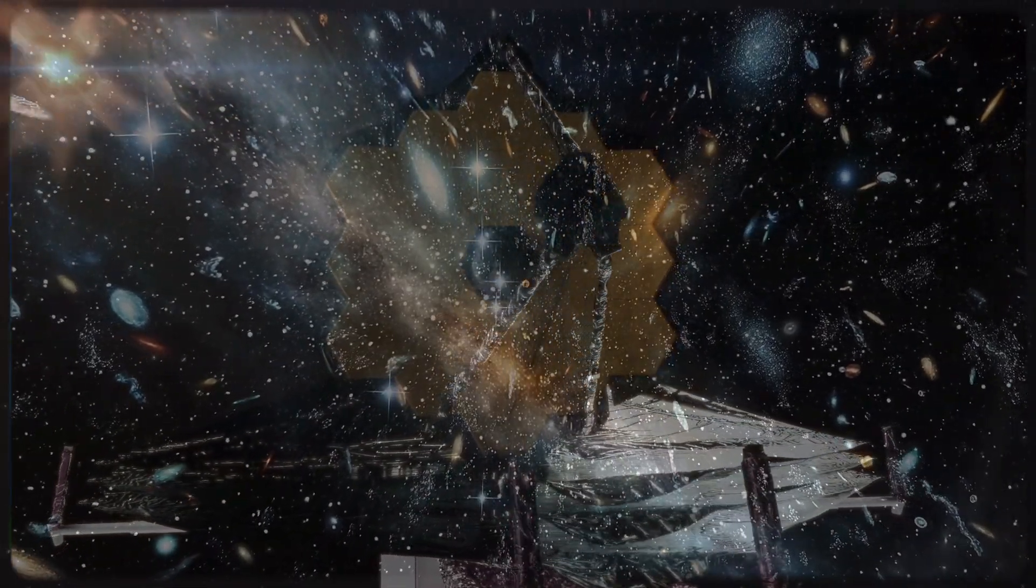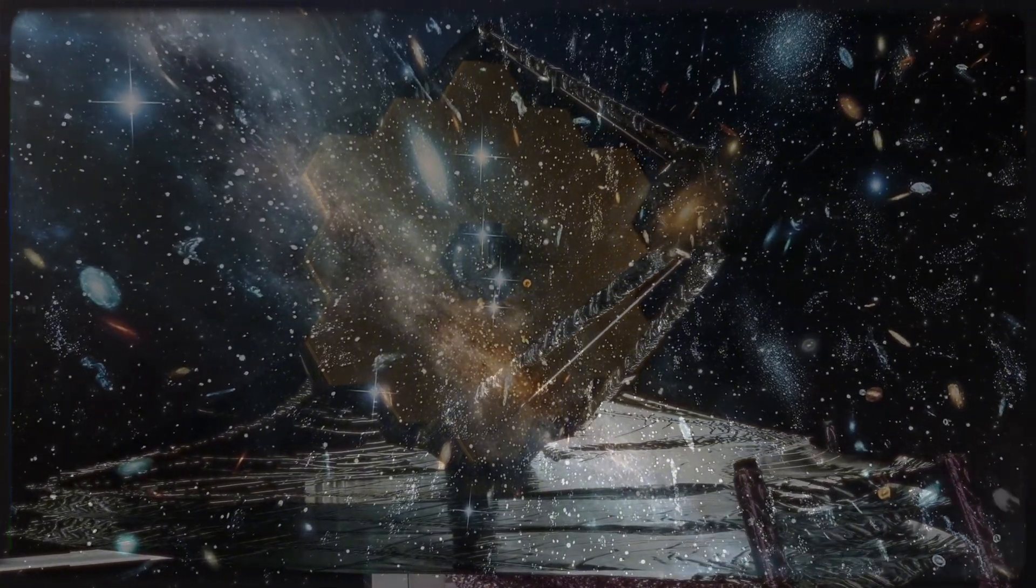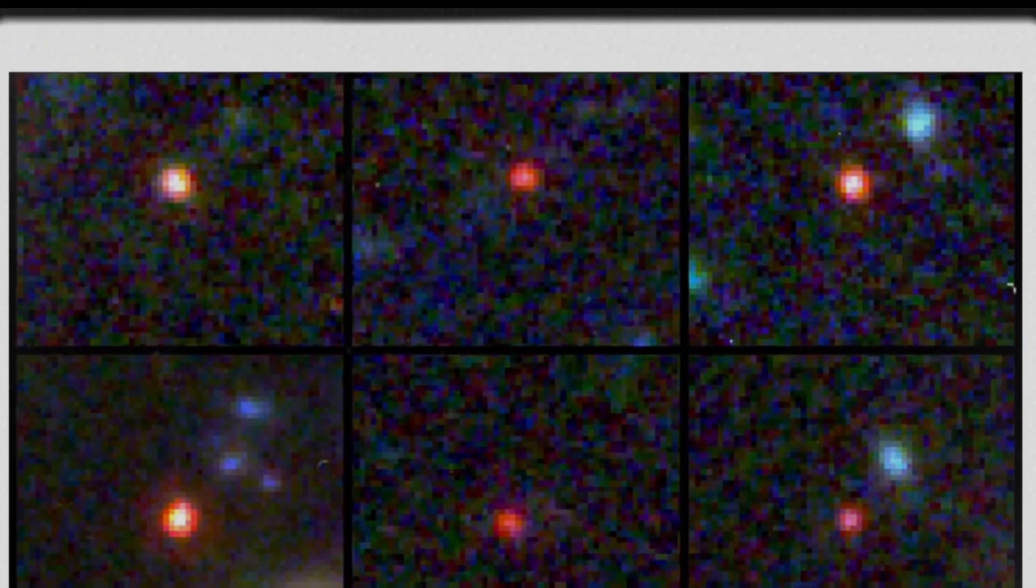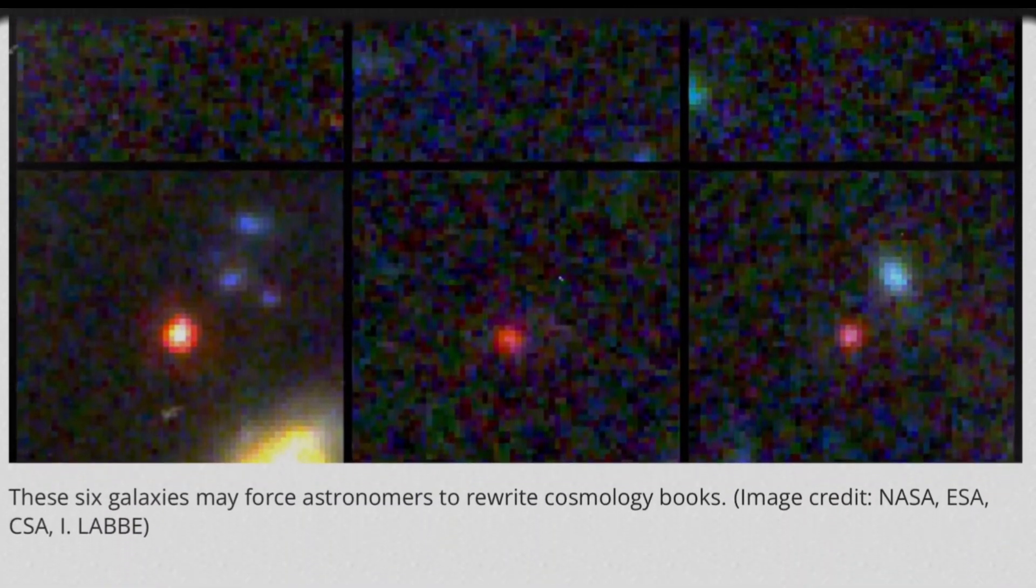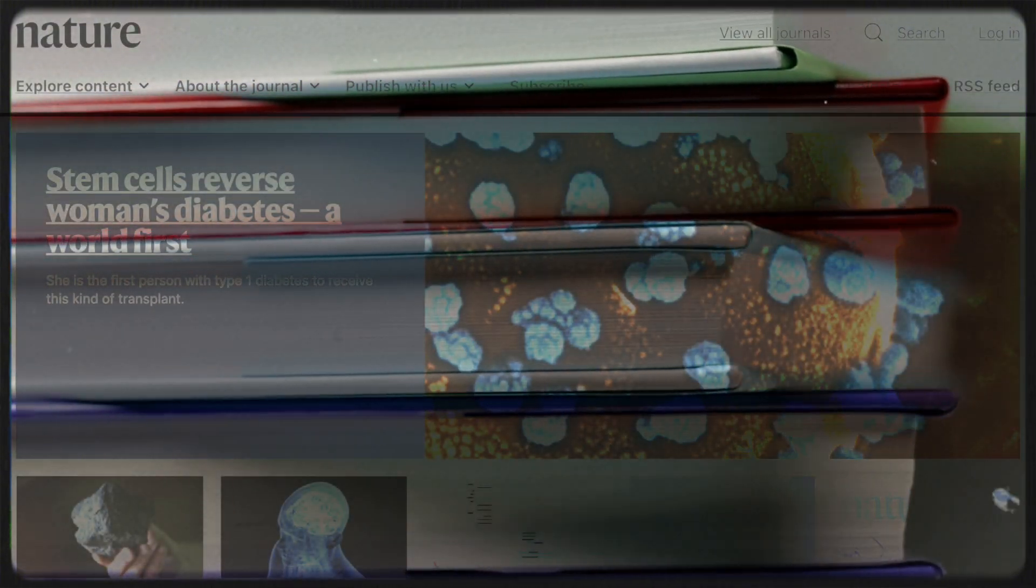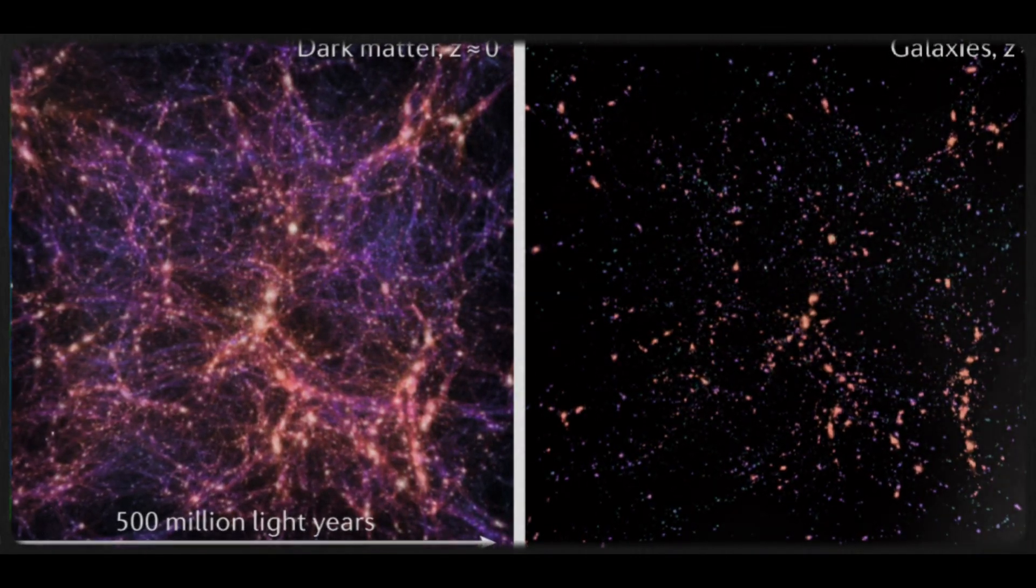Astronomers using the James Webb Space Telescope have made an unexpected discovery in the early universe. They have identified six extremely large galaxies dating back to 500 to 700 million years after the Big Bang, which formed the universe. A new study published in Nature reveals that this finding is dramatically altering our understanding of galaxy formation during what was previously thought to be the universe's early stages.